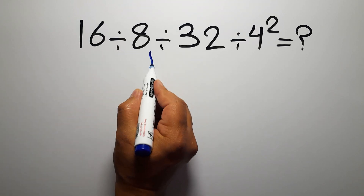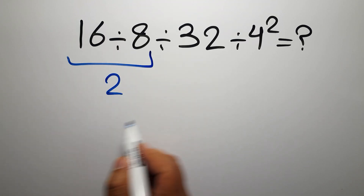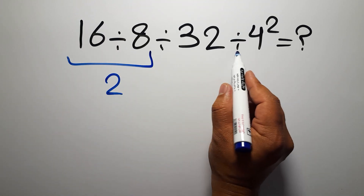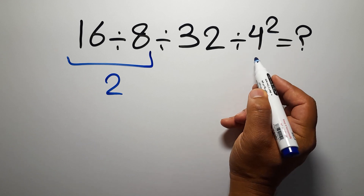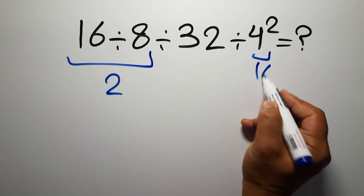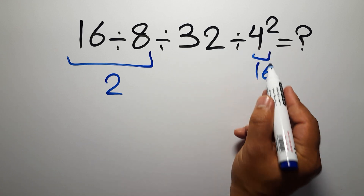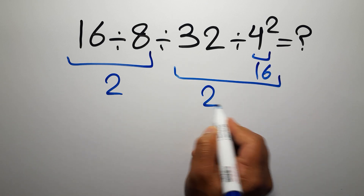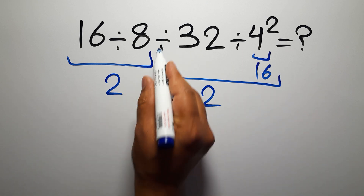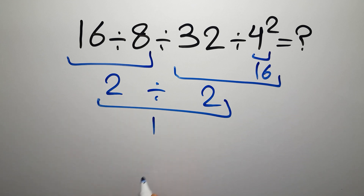16 divided by 8 is just 2, and here we have 32 divided by 4 squared. 4 squared is 16, and 32 divided by 16 gives us 2. So 2 divided by 2 equals 1 — but this answer is not correct.